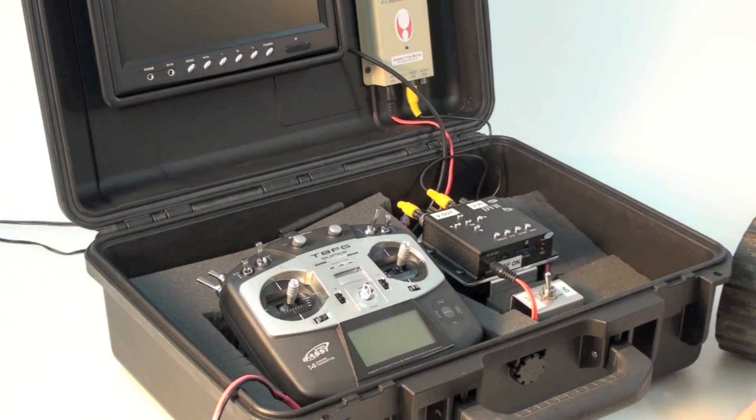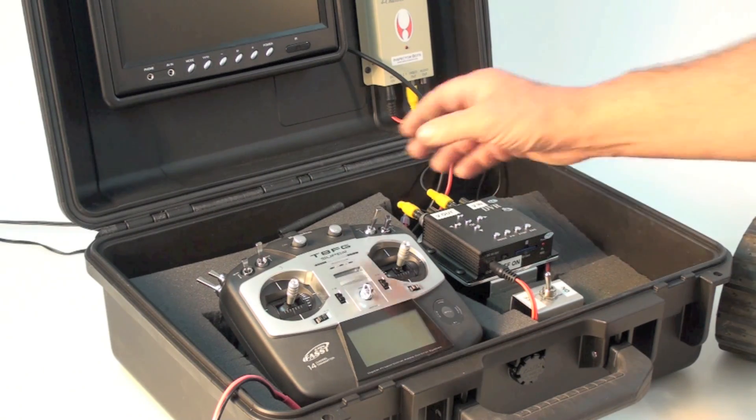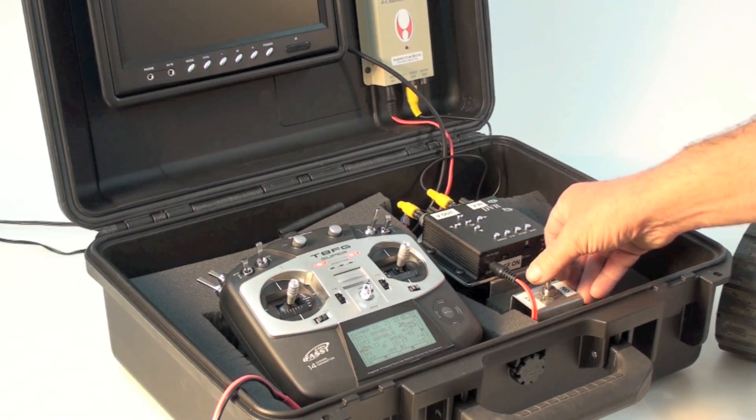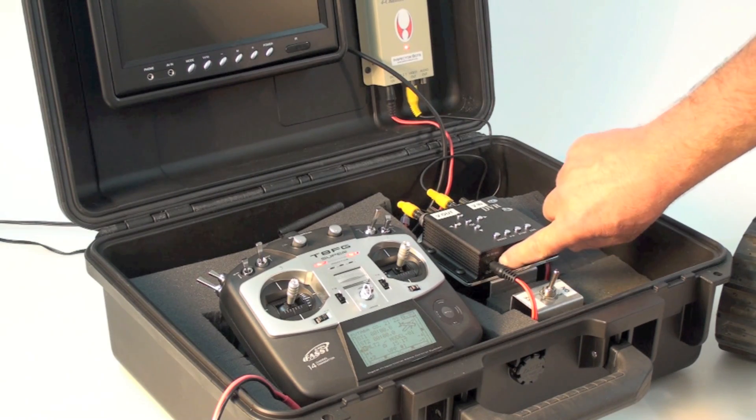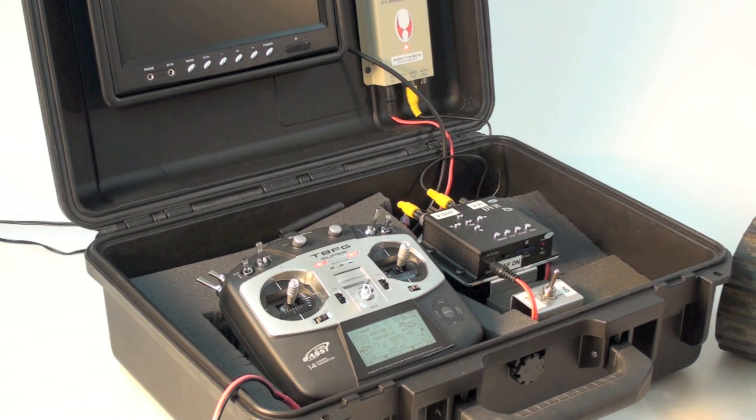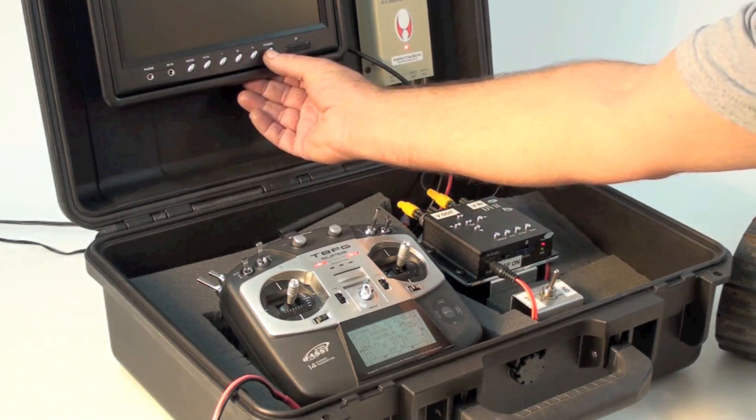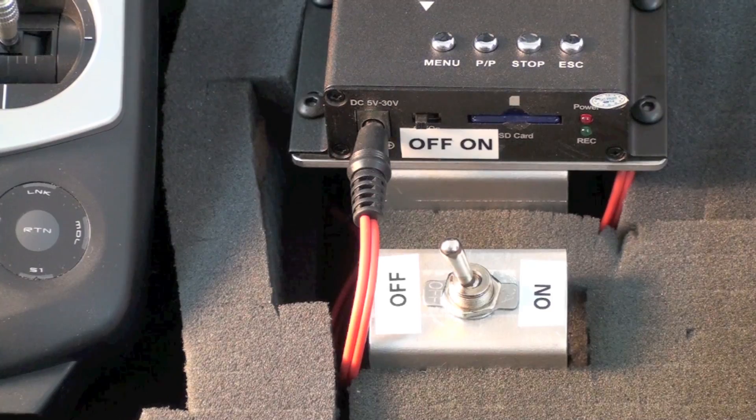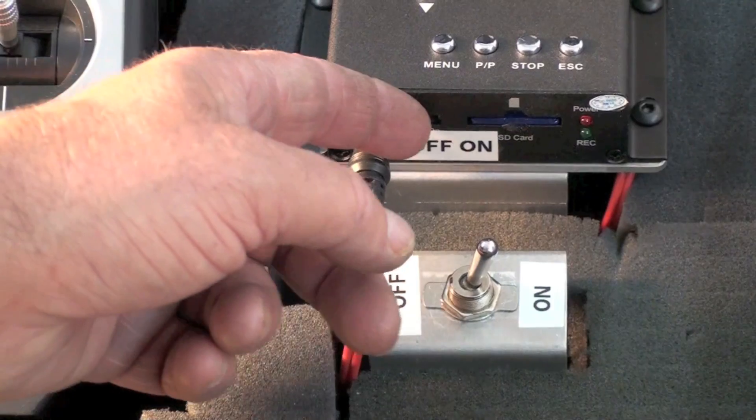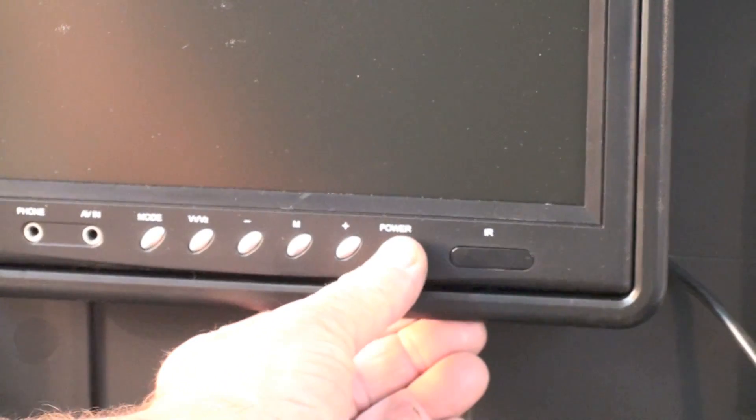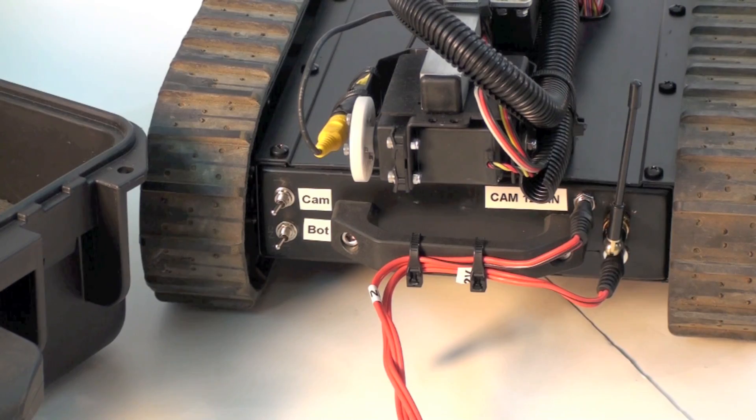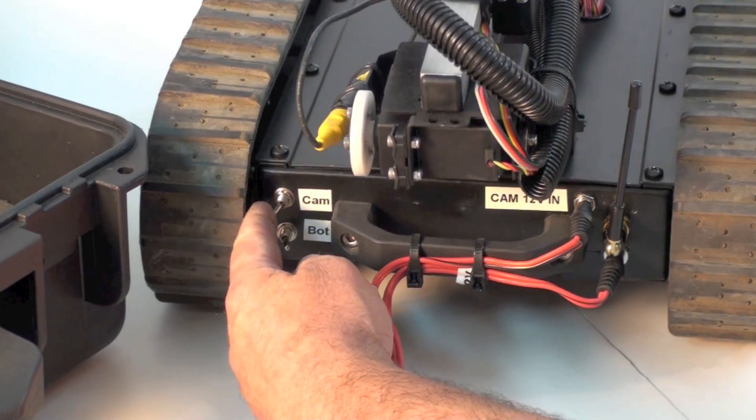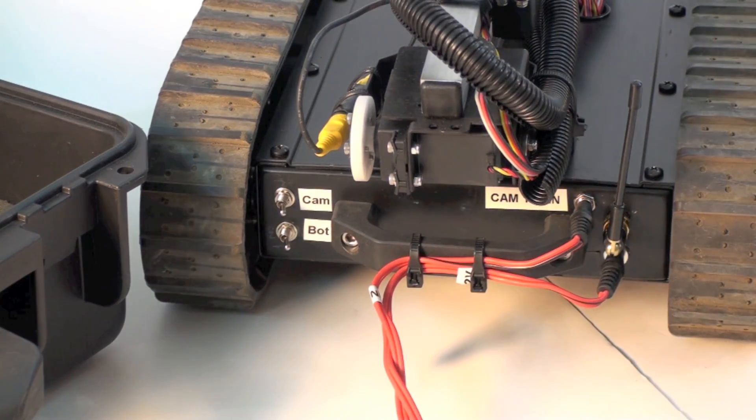Once you have everything plugged in you can start up the system. Turn on the radio, turn on the OCU, turn on the DVR and hold down the power button for one second. To turn on the bot simply throw these two switches. One for the platform, one for the camera.